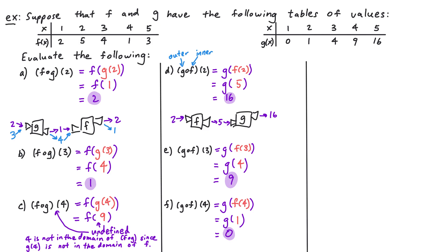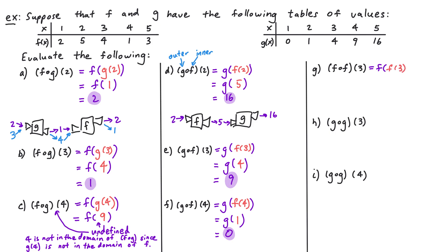Functions can even be composed with themselves. In example g we want to evaluate f composed with f of 3. Since f is on both sides of the composition symbol, f is both the inner and outer function. So f composed with f of 3 is f of f of 3 — we take 3, plug it into f, then take the result and plug it into f again. f of 3: looking at the table for f, when the input is 3 the output is 4, so f of 3 is equal to 4. Now we do f of 4: when the input is 4, the output is 1. So f of 4 is equal to 1, which means f composed with f of 3 is 1.